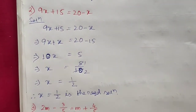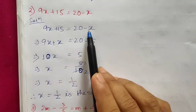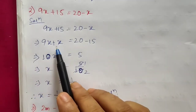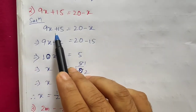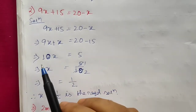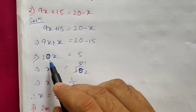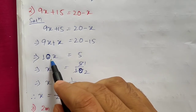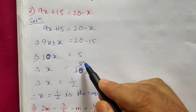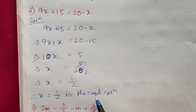Question 2: 9x plus 15 equals 20 minus x. Transposing minus x to the left side gives plus x, so 9x plus x equals 10x. Transposing plus 15 to the right side gives minus 15, so 10x equals 20 minus 15, which is 5. Dividing, x equals 5 divided by 10. Simplifying, x equals 1/2. Hence x equals 1/2 is the required solution.